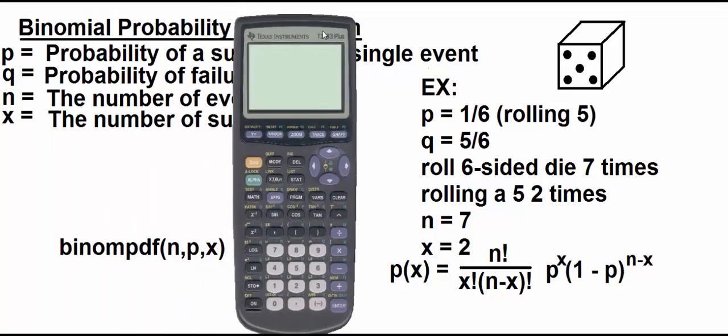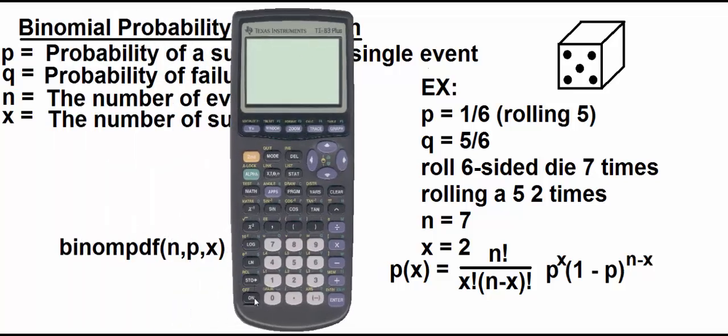I pulled up my calculator here. I'm going to turn it on. And we're going to need to pull up the binompdf distribution, and the distribution would be under second vars. So second distr, and distr is short for distribution. So we're going to scroll down here, and then 0 and A are the two that are important for this topic. Here we have the binompdf, and that's what we want. So we're going to select that.